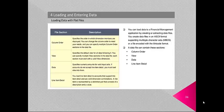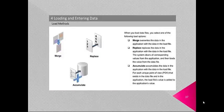The View section specifies the default view for all data following it; each section must start with a valid view dimension. Data specifies numeric amounts for valid input cells; if accounts do not accept line item detail, you must load data into them directly. Line Item Detail is loaded to accounts that support it; a line item is represented by a delimited pair consisting of a description and a value. When you load data files, you select one of the following load options: Merge, Replace or Accumulate.